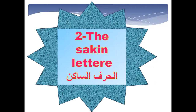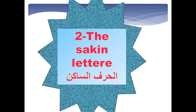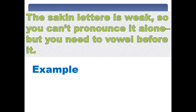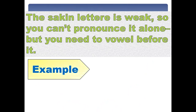The second type is the sakin letter — Al-harf al-sakin. The sakin letter is weak, so you cannot pronounce it alone. You need a vowel letter before it. For example, it is very difficult to pronounce a sakin letter on its own, so if you put a vowel letter before it, it will be easy to pronounce.